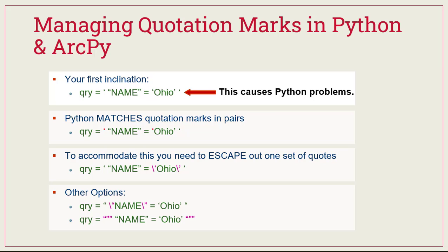There are other options. You could put your entire query string in double quotes, and then escape out the quotation marks around your field name where you're using double quotes. You could also use triple quotes — a set of three quotation marks — to encompass your attribute query. That said, the most common convention is that first one where we escape out the single quotes. When you're looking at other people's code, ArcPy modules, or textbooks, more often than not you'll see individuals escape out those single quotes.